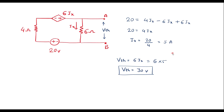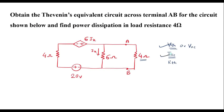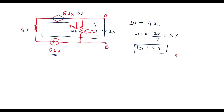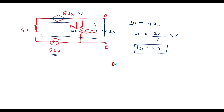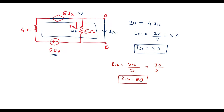Thus we have calculated two parameters: Vth and ISC. Now Rth is nothing but Vth divided by ISC. Therefore, Rth equals 30 divided by 5, which equals 6 ohm.